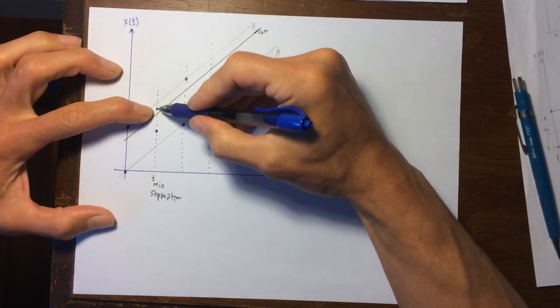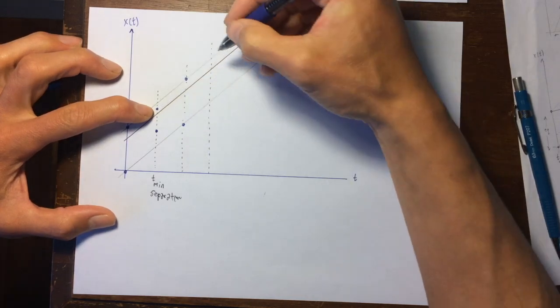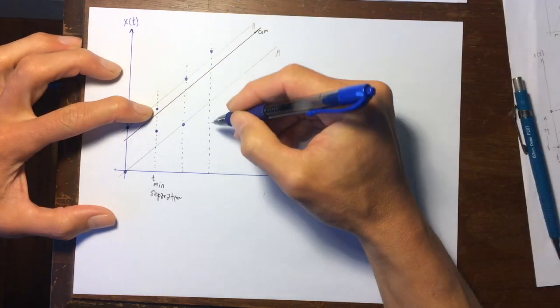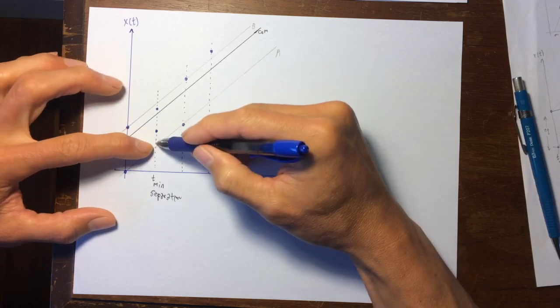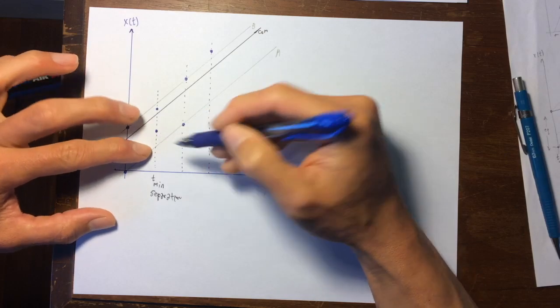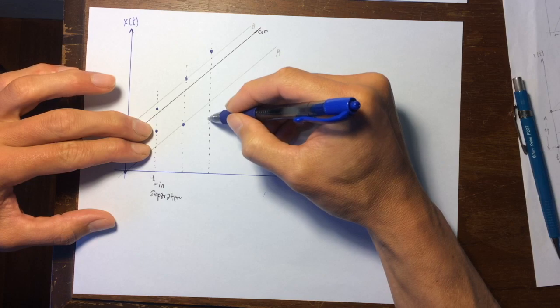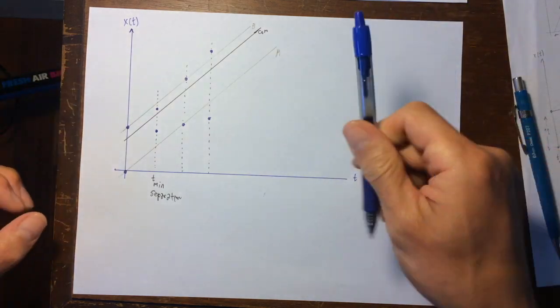Object B will essentially be the same distance out on the other side, and object A will be the same distance out. So that distance from here to here, it will have it outside like this and you can see what's happening.